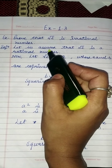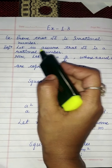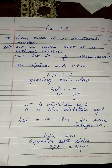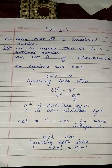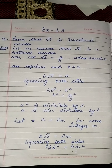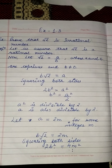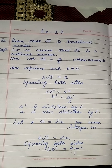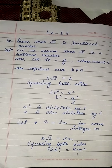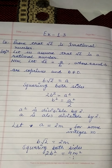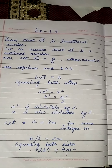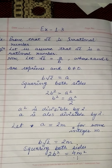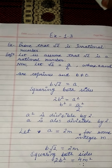Let us assume that under root 2 is a rational number. We have to prove it irrational, but we will assume that it is a rational number. This is called the contradiction method, in which we prove that our supposition is wrong.